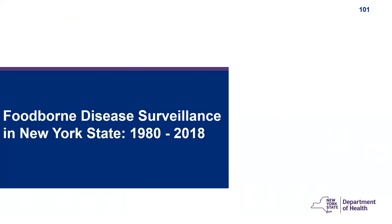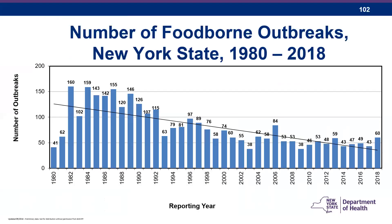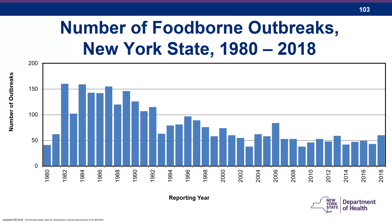Now we're going to talk about foodborne disease surveillance in New York State from 1980 to 2018 and go over the data collected over those years. You'll see our number of foodborne disease outbreaks ranging from hundreds in the early 1980s down to about 60 foodborne disease outbreaks in 2018. We use the same definition throughout so all the numbers are on the same level.